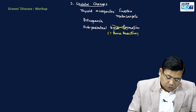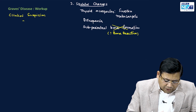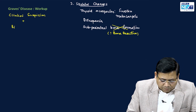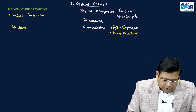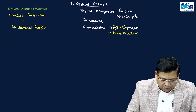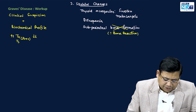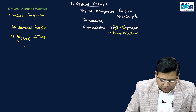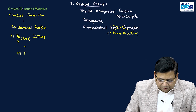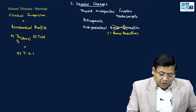Regarding the workup: clinical suspicion combined with biochemical investigations is the approach. The biochemical profile shows increase in free T3 and free T4, decrease in TSH, and most importantly an increase in thyroid stimulatory immunoglobulin (TSI).